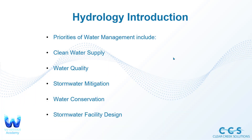Some of the priorities of water management include making sure everyone has access to that clean water supply, overall water quality, and also making sure that there's not too much erosion in our streams. If we have too much runoff from a site, there's too much erosion because erosion does occur in natural streams. If there's too much, then it's going to start to erode, get into our streams, and reduce the water quality of our streams, and we don't want that to happen.